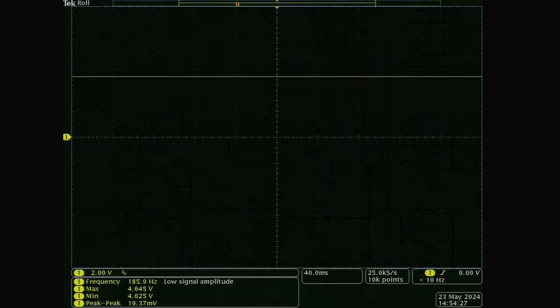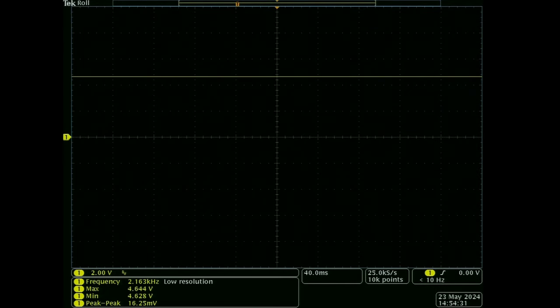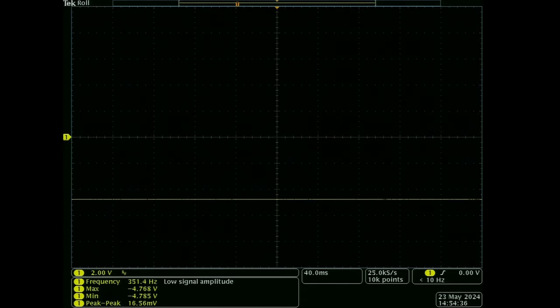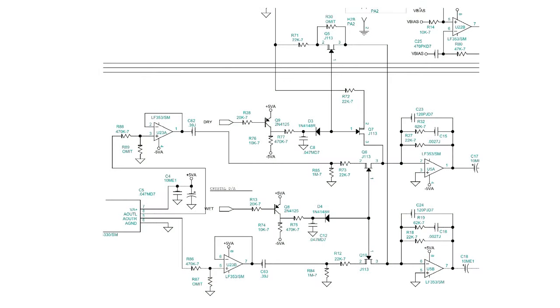Initially, I thought maybe these JFETs could control the blend of dry and wet signals, and therefore the strength of the effect the pedal produces. But in probing around, I haven't seen any evidence that these switches can be turned partially on or off. In any case, the control signals from the microcontroller are 5-volt logic signals. The transistors invert the voltage, swinging between positive 5 volts and negative 5 volts, when the logic signals go from 0 to 5 volts.